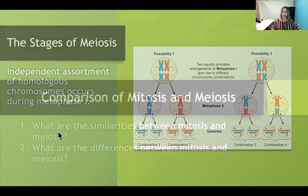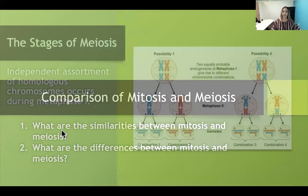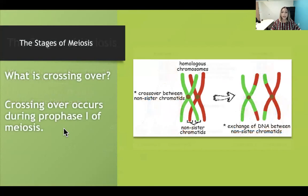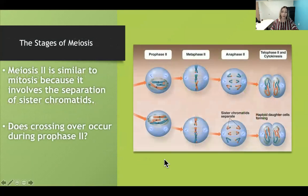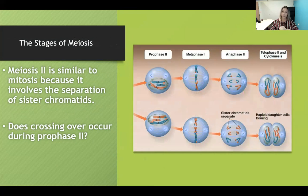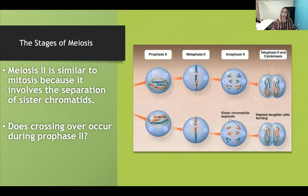The overall function of meiosis is to produce genetically unique haploid gametes for sexual reproduction. The daughter cells are genetically unique because of genetic recombination that occurs during prophase one through crossing over, and during metaphase one because of independent assortment of homologous chromosomes. Meiosis two is similar to mitosis because everything is happening to sister chromatids, just like mitosis.